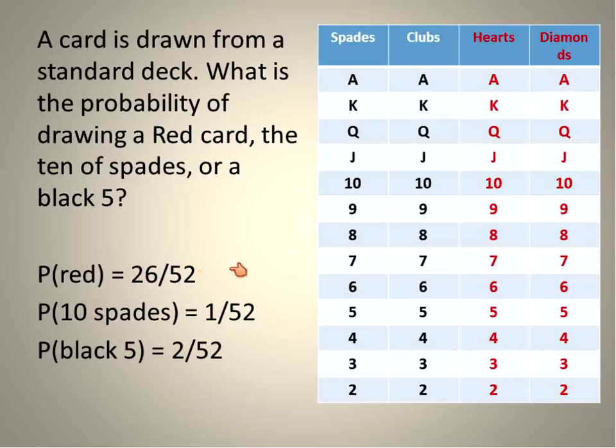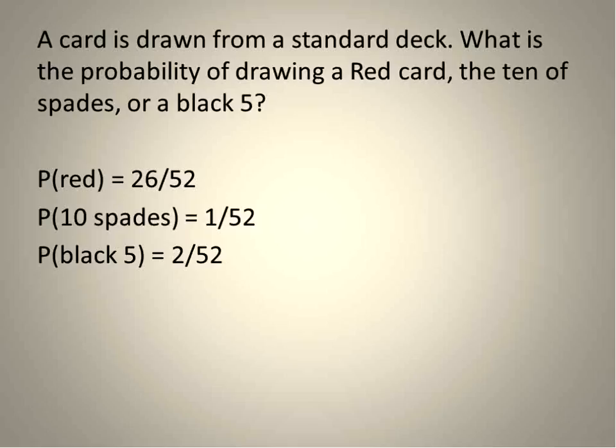I'm going to get rid of this table so that I have a little bit more room. But I'm going to keep those probabilities. To calculate, I add them together. 26 out of 52 plus 1 out of 52 plus 2 out of 52 gives me a total of 29 out of 52. This fraction is in lowest terms, so that is my final answer for that probability.